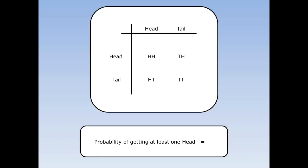What's the probability of getting at least one head? Well, there are three places this happens. I could get two heads, a tail and a head, or a head and a tail, and there are four things that could happen altogether. So the chance of getting at least one head is three out of four.